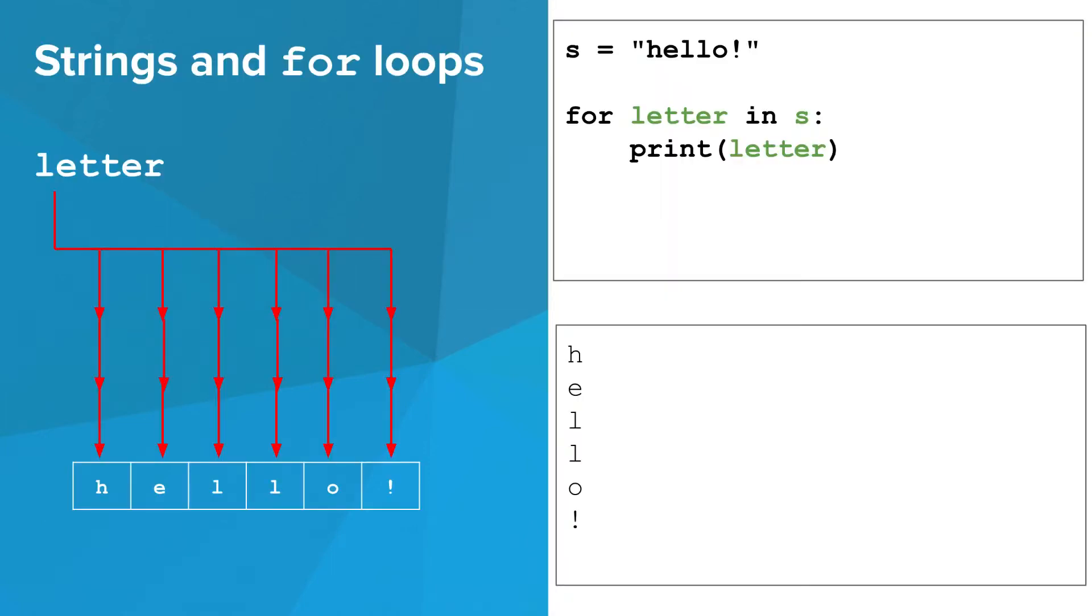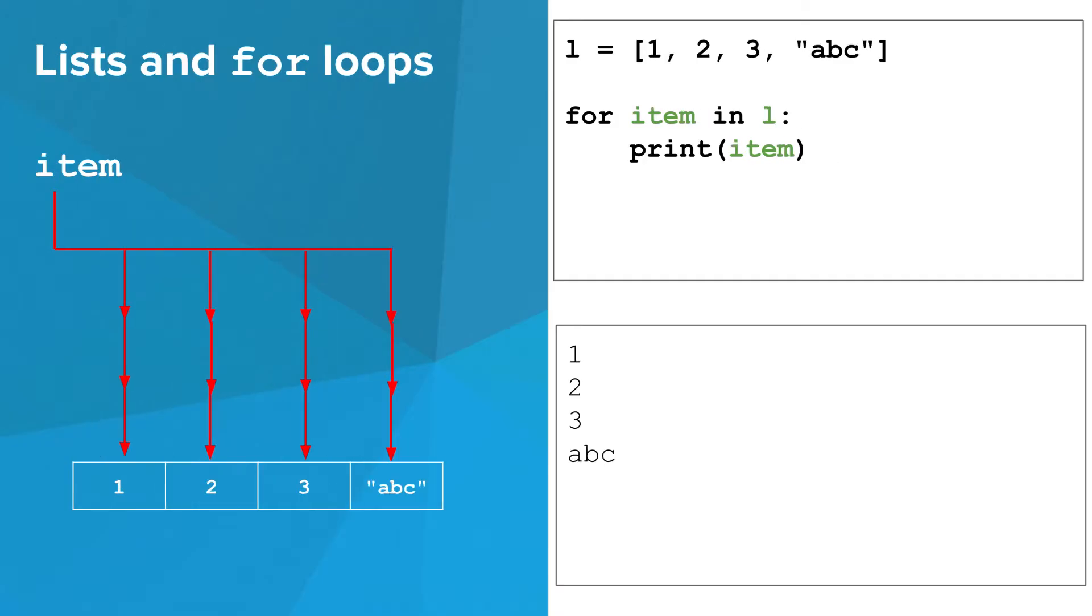Okay, going back to lists. Now, I'd like to bring your attention back to this slide from the strings module. Remember that you can use a for loop to go through a string one character at a time. Lo and behold, you can do the same thing with lists. In this example, we have a list called l, and we create a variable called item in a for loop that gets set to each thing in l in succession.